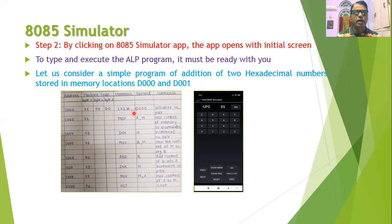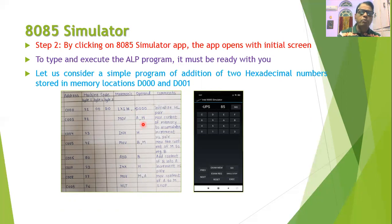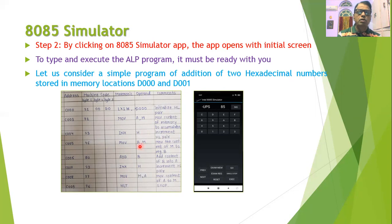The first instruction will be LXI H D000, where we initialize the HL pair to memory location D000. Then we move the content from memory to the accumulator, so the first number is moved to the accumulator. Then we increment the HL pair so it points to location D001. Then we move the second number to register B. Now the first number is in the accumulator and the second number is in register B. Then we use the instruction ADD B, which adds the content of register B into the accumulator.